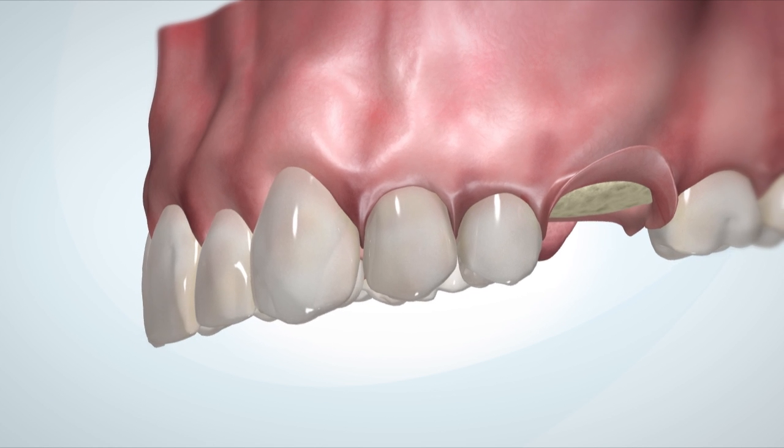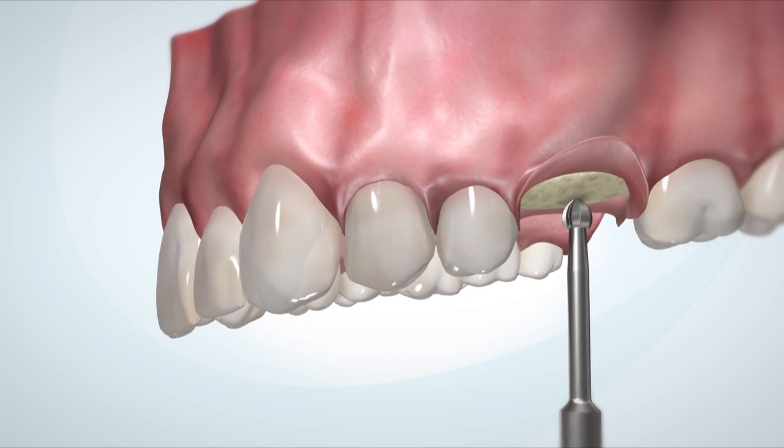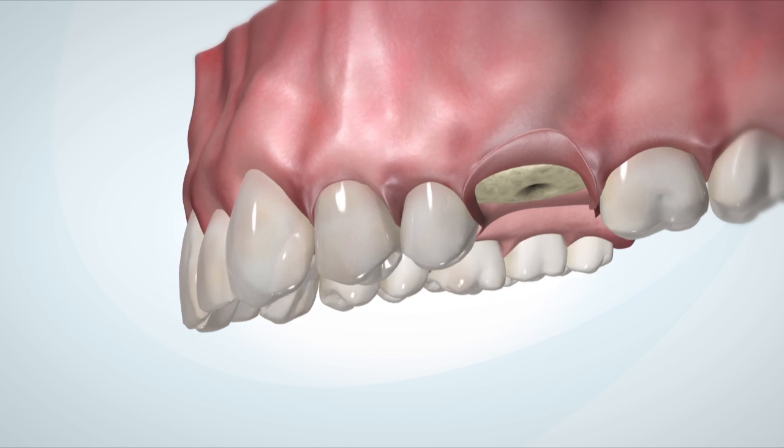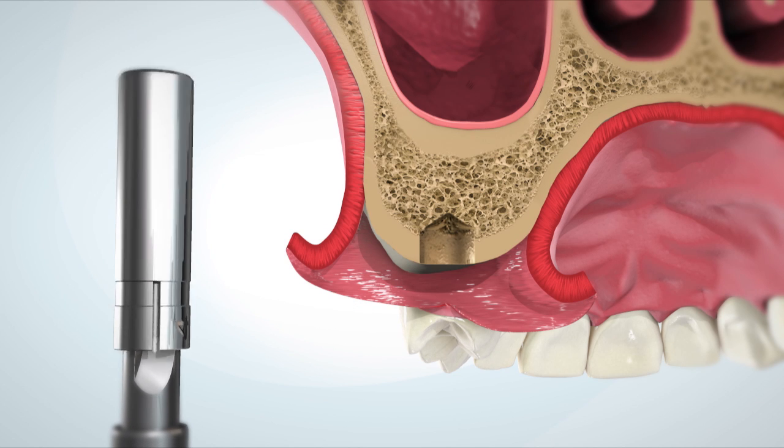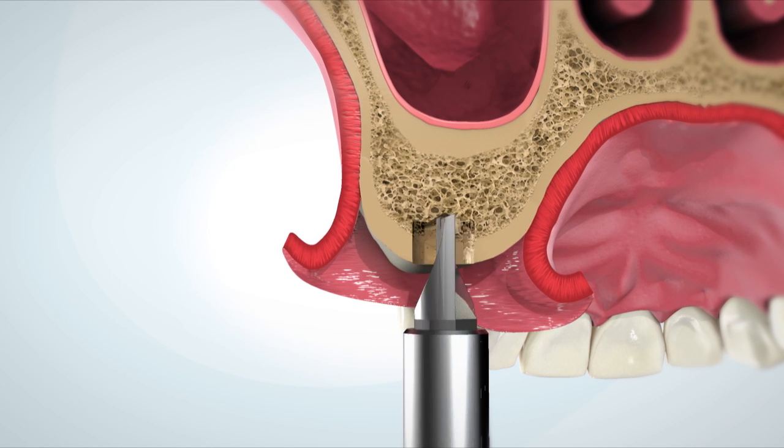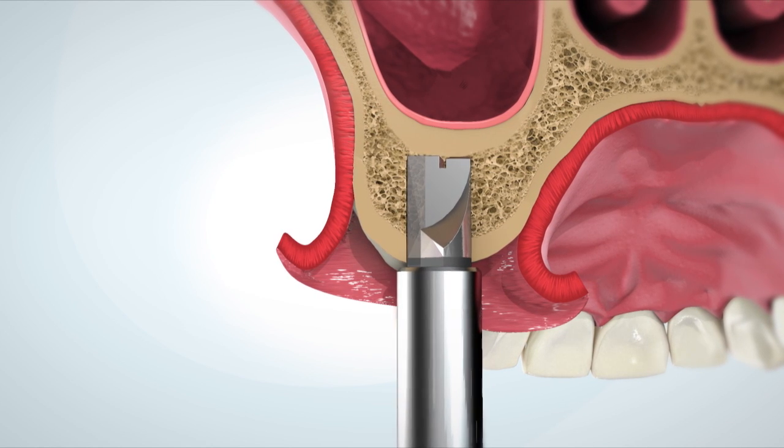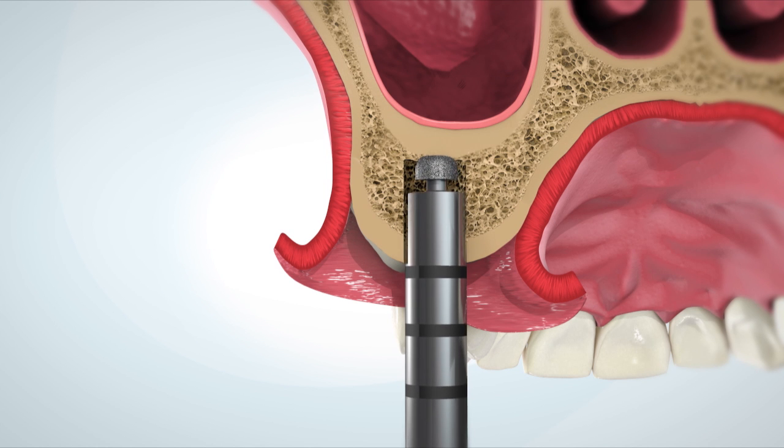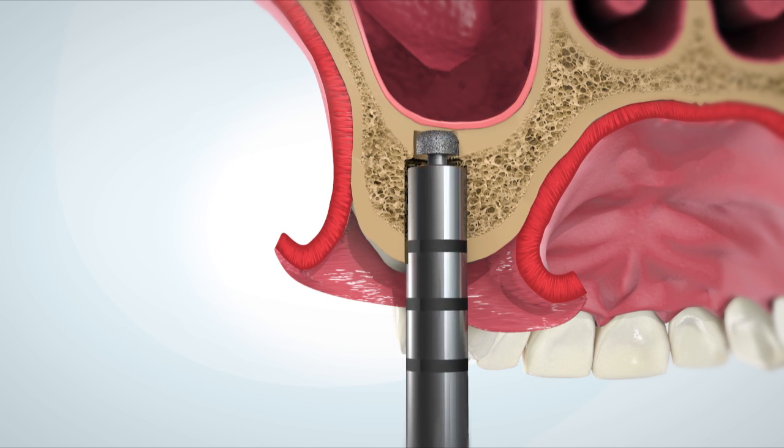Begin the procedure by drilling an osteotomy at the implantation site. Stoppers may be used to assist drilling to the desired depth. Use the flat drill until the sinus floor cortex is reached according to radiographic measurements. Use the cortex drill to safely break through the sinus floor.